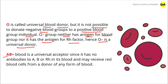AB positive blood is a universal acceptor since it has no antibodies to AB or Rh factor in its blood, and may receive red blood cells from a donor of any form of blood.